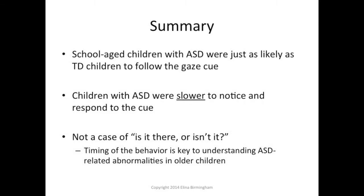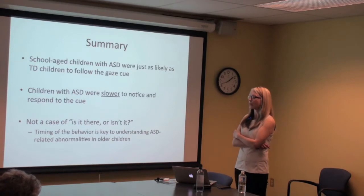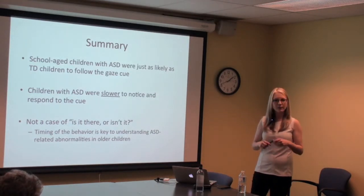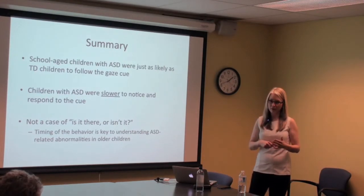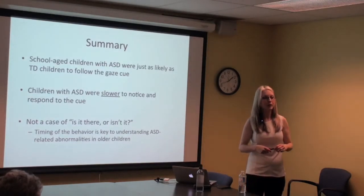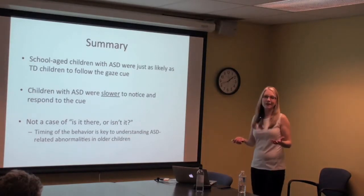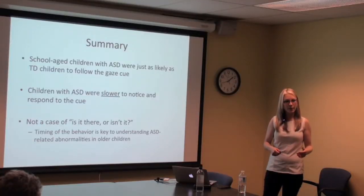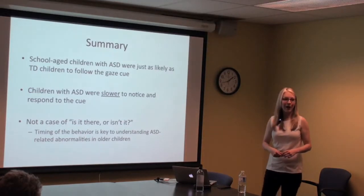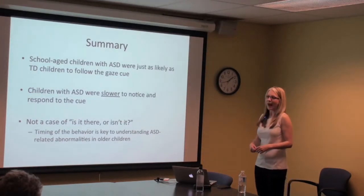A summary: kids with ASD were just as likely as typical children to follow the gaze cues. This is one of the first experiments, to my knowledge, testing this in a real-world setting with school-aged kids — all previous naturalistic studies used preschoolers and infants. However, they were slower to notice the cue initially — they took longer to look at Krista and process that she was looking somewhere else. It's not absent or present; it's really the timing and quality of the behavior that looks different in ASD. This is being found repeatedly in my field — it's not that they're not interested, it just looks a little different.